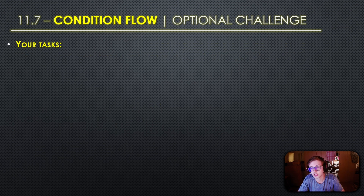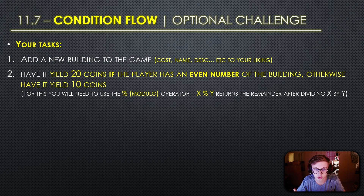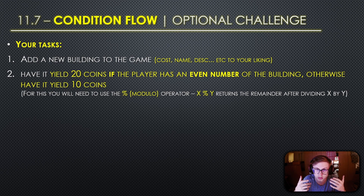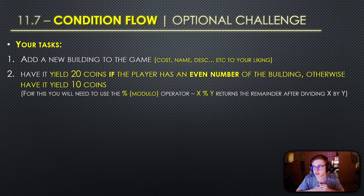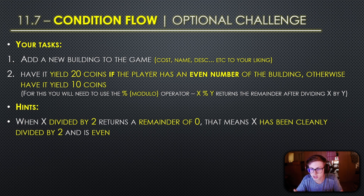Now for the optional challenge: add a new building to the game - the cost, name, and description can be whatever you want - but your main task is to have it yield 20 coins if the player has an even number of the building, otherwise yield 10 coins. For this you'll need the modulo operator. The modulo operator returns the remainder after dividing x by y. Hint: when x divided by two returns a remainder of zero, that means x is even.